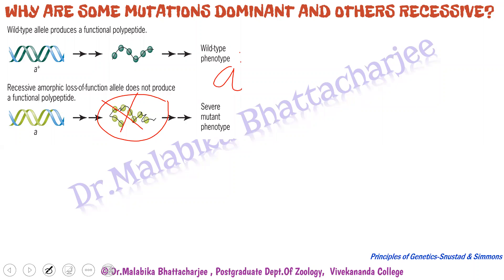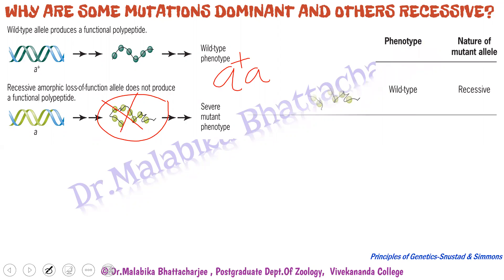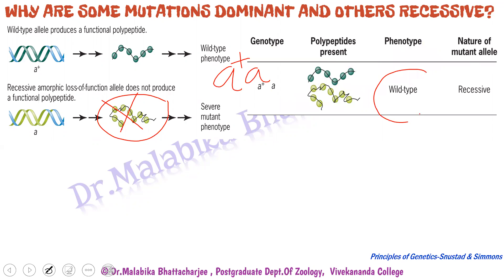Imagine a genotype A-plus A, where A-plus is dominant to A. We will see the wild type phenotype because A-plus produces a functional wild type polypeptide capable of carrying out all functions, even though A cannot produce a functional enzyme. The second case is that recessive mutations can be loss-of-function alleles that produce a partially functioning polypeptide.